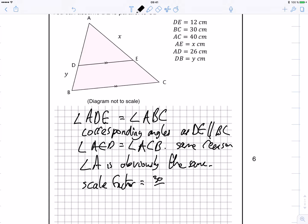BC is 30, 30 divided by 12 and that's equal to, well both are divisible by 6 so it's 5 over 2. So I have my scale factor.